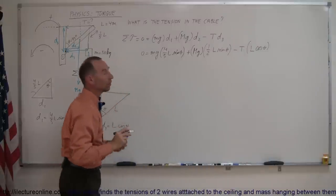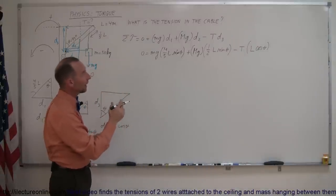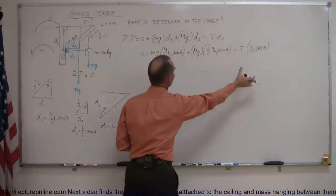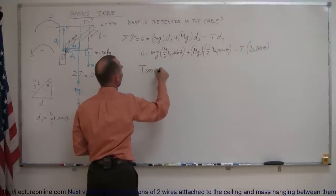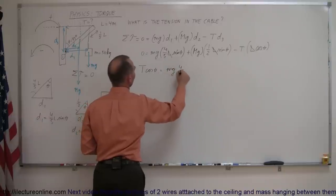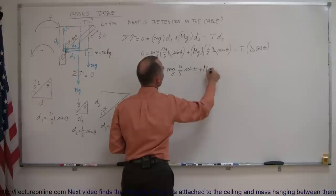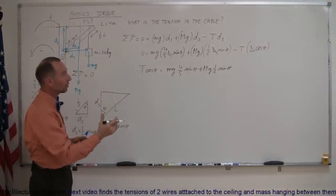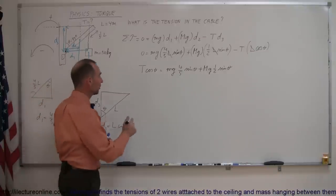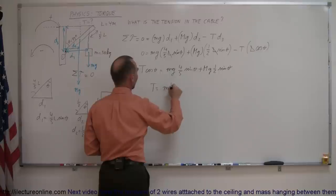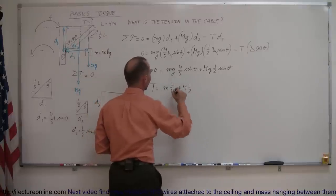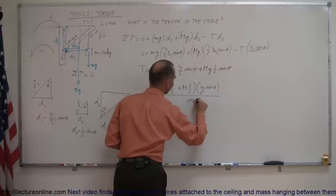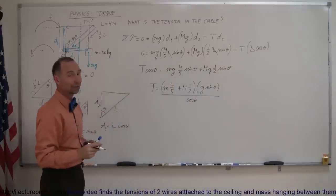Now we can solve this equation. Every term has the length L of the beam in it, so L cancels out. Moving minus T·cos(θ) to the other side gives: T·cos(θ) = mg·(4/5)·sin(θ) + Mg·(1/2)·sin(θ). Dividing both sides by cos(θ) and factoring out sine of theta and g: T equals (m·4/5 plus M·1/2) times g·sin(θ)/cos(θ), which equals g times the tangent of theta.